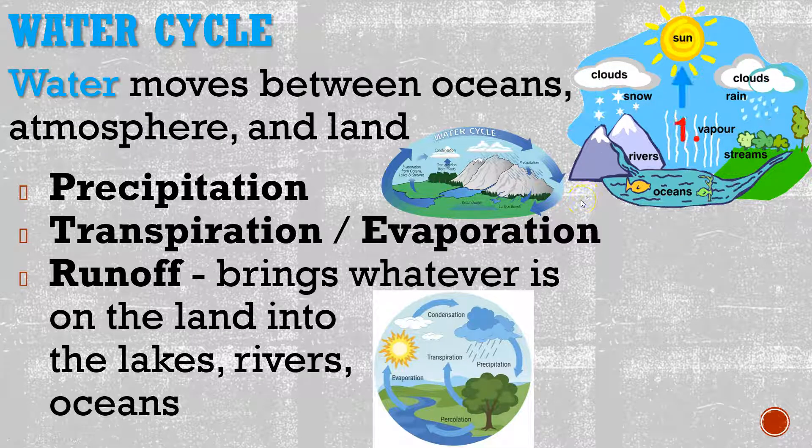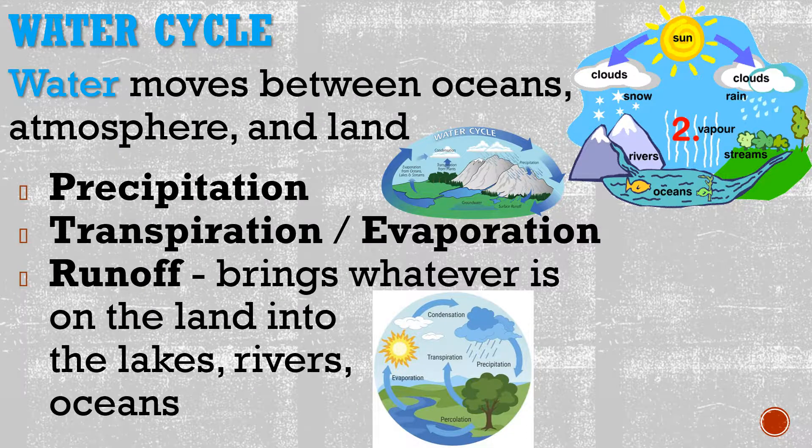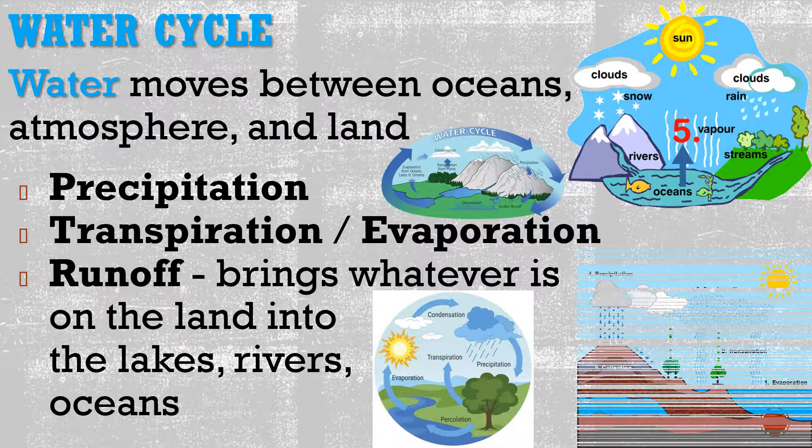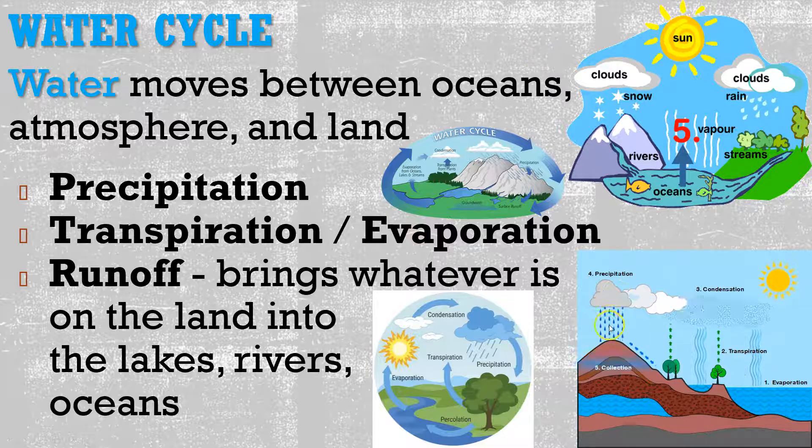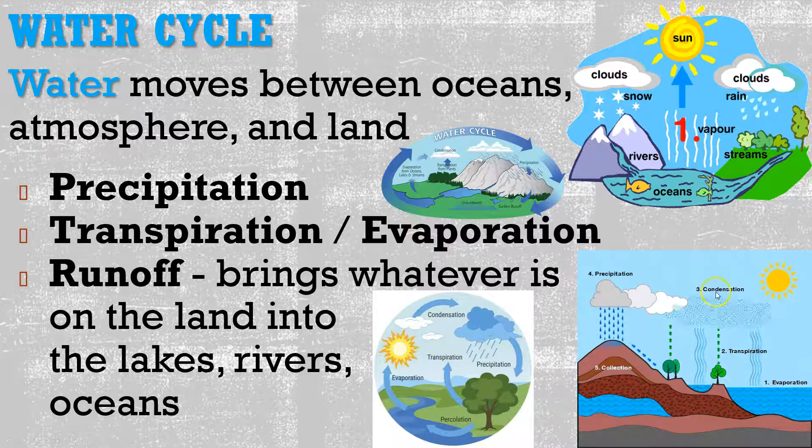And then runoff is going to take whatever is on the land, and that's going to get washed into the lakes, the rivers, the oceans, and the cycle is going to continue. The big problem with runoff is that whatever is on the land is also going to make its way into the rivers and the oceans, bringing with it potentially things that you don't want there. So here we can see the water just moving through there. Precipitation, runoff, that's some transpiration there, we've got evaporation, and condensation back into clouds.